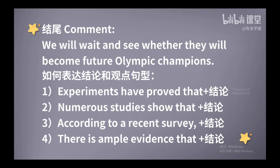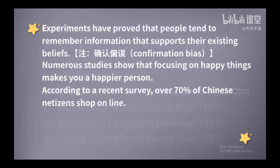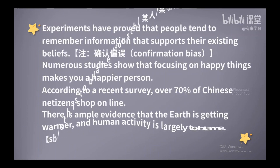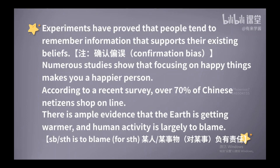人类活动怎么表达呢？对了，human activity。谁要负主要的责任？我们可以用这样一个句型：Someone or something is to blame. 这个词blame原意表示责备的意思，如果要责备某个人或某个东西，那也就是说它要负主要责任。所以这句话我们可以这样说：There is ample evidence that the earth is getting warmer, and human activity is largely to blame.